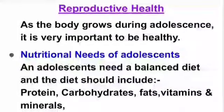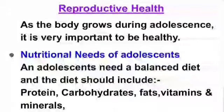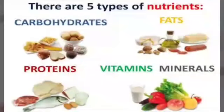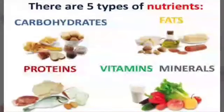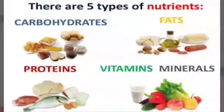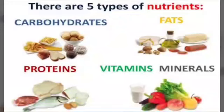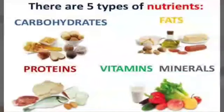Iron-rich foods like green leafy vegetables are also essential because iron is required for the formation of blood in our body. There are five types of nutrients: carbohydrates, fats, protein, vitamins, and minerals — our diet should include these in correct proportions. Remember that we should avoid junk food like chips and packed or tinned snacks because they do not have adequate nutritional value, and thus they are not a replacement for regular meals.